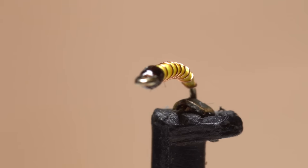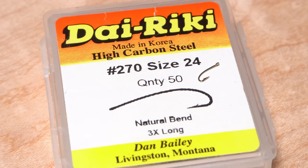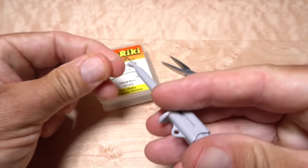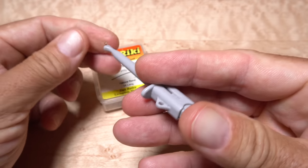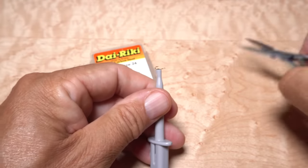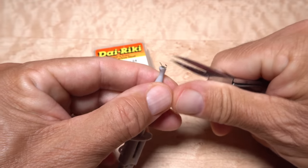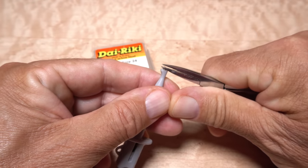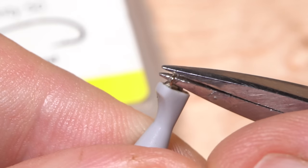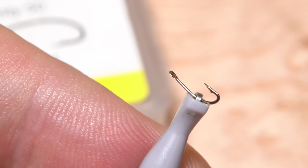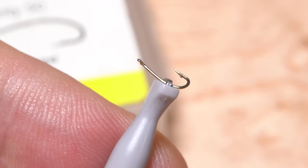The foundation for this diminutive offering is a size 24, 3x long hook. Although a Dyreki number 270 hook is no longer available, I'm sure you can find a suitable replacement. Hooking fish with irons this small can be a challenge, but removing them from a trout's jaws without hurting the fish is very often a much greater challenge. So do yourself a favor and mash the barb, as teeny as it is, even before getting the hook firmly secure in the jaws of your tying vise.